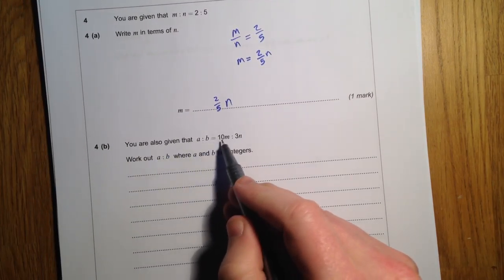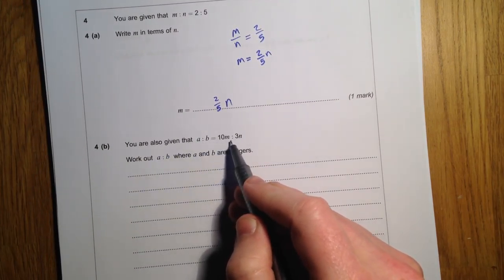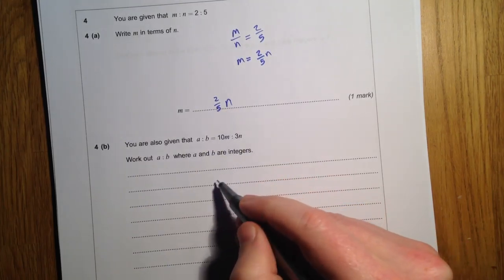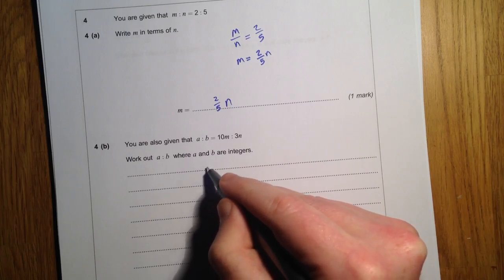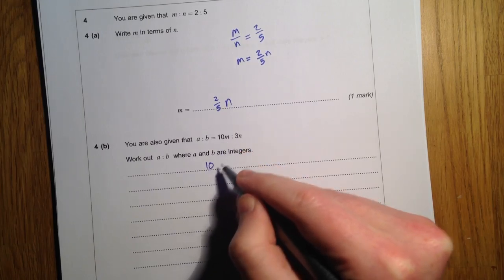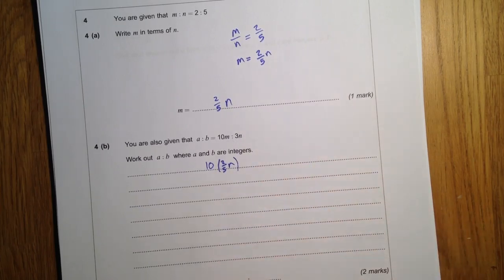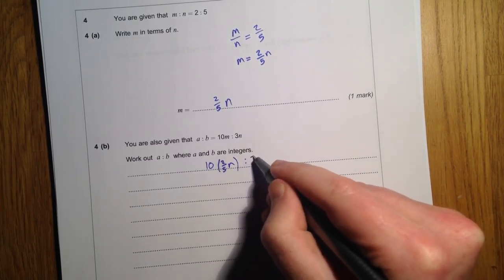So we're given a to b is the ratio of 10m to 3n. Now I know what m is in terms of n, so I can write 10m as 10 lots of 2 fifths n. That's m from part a. And then that's 3n.